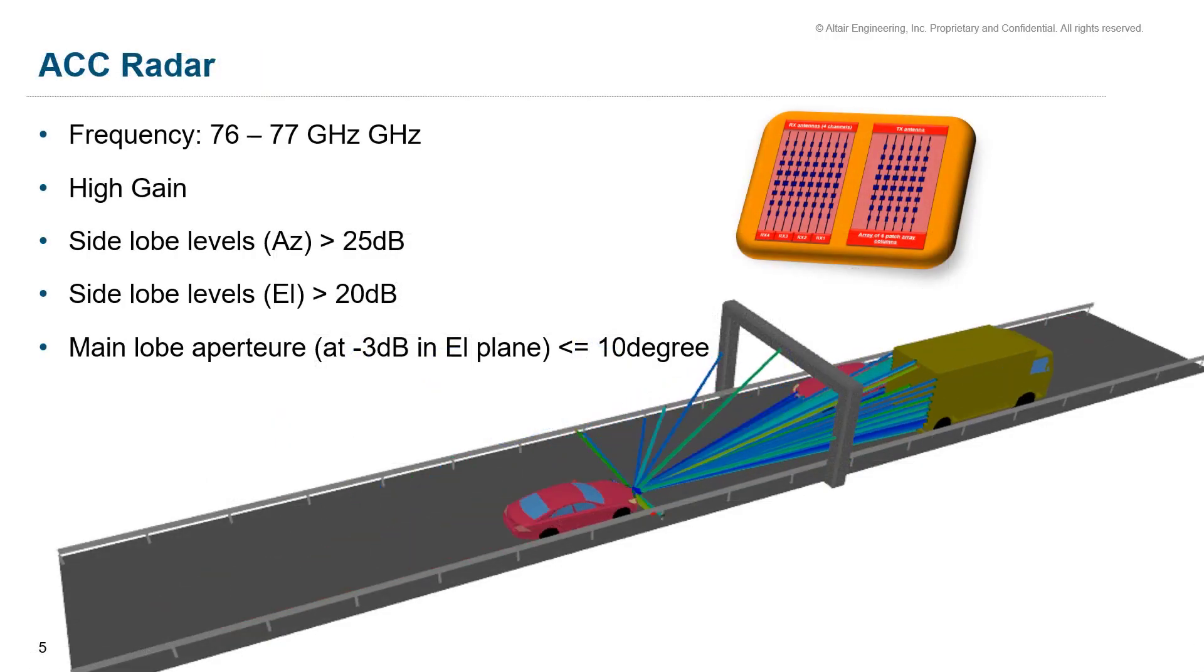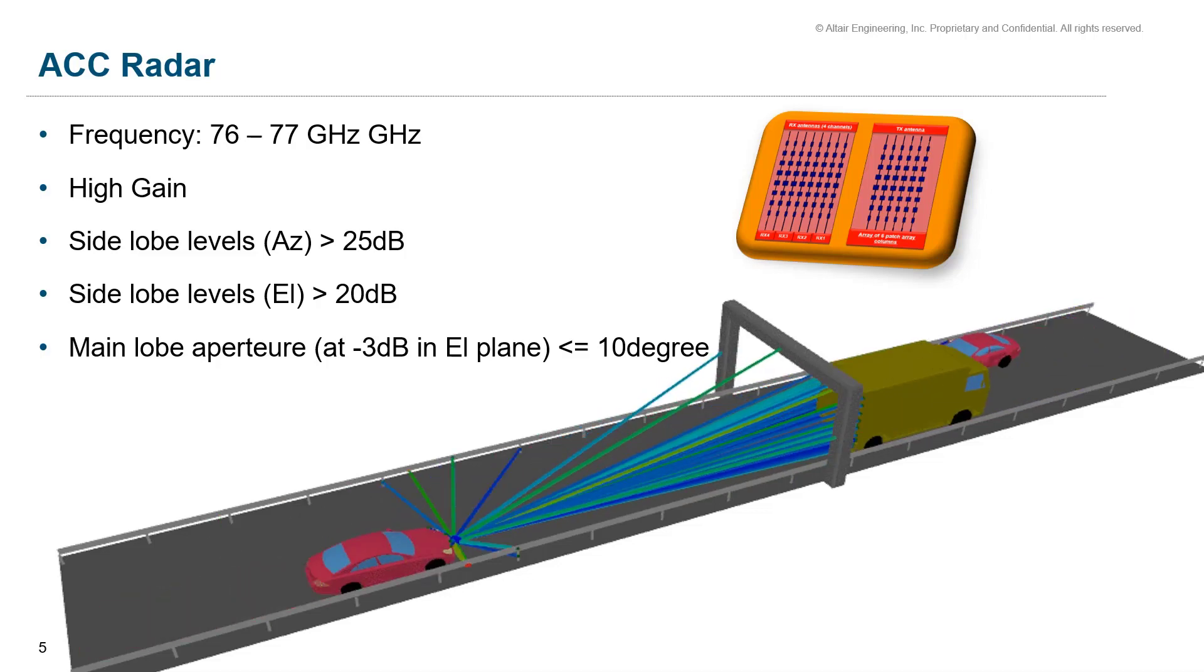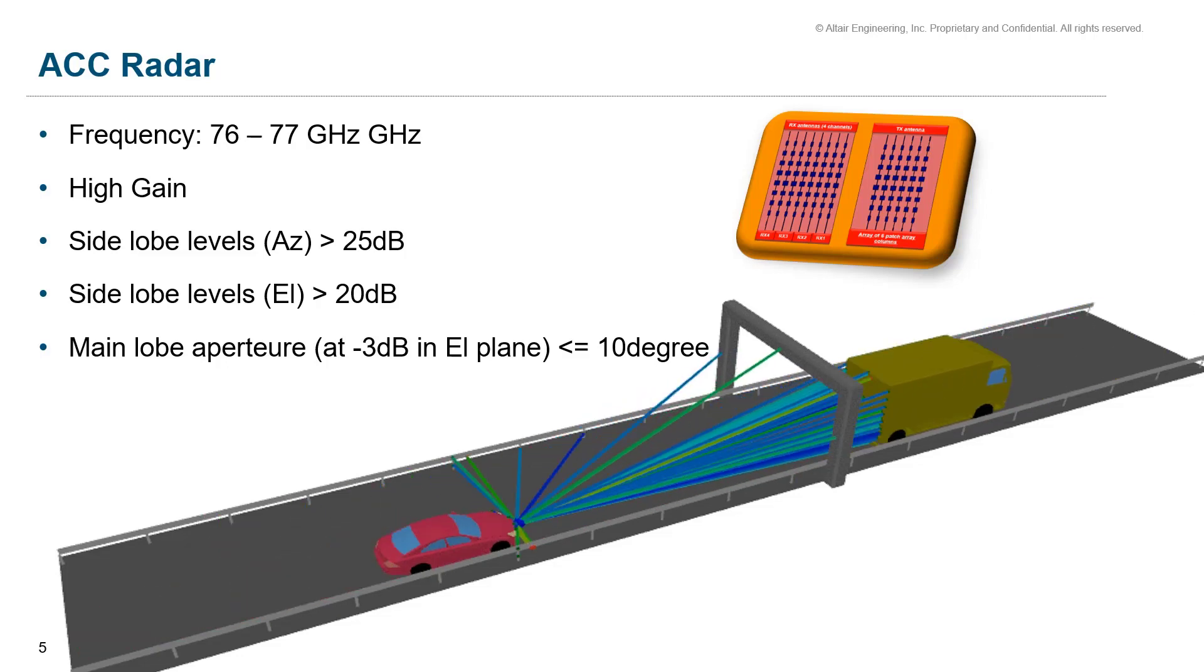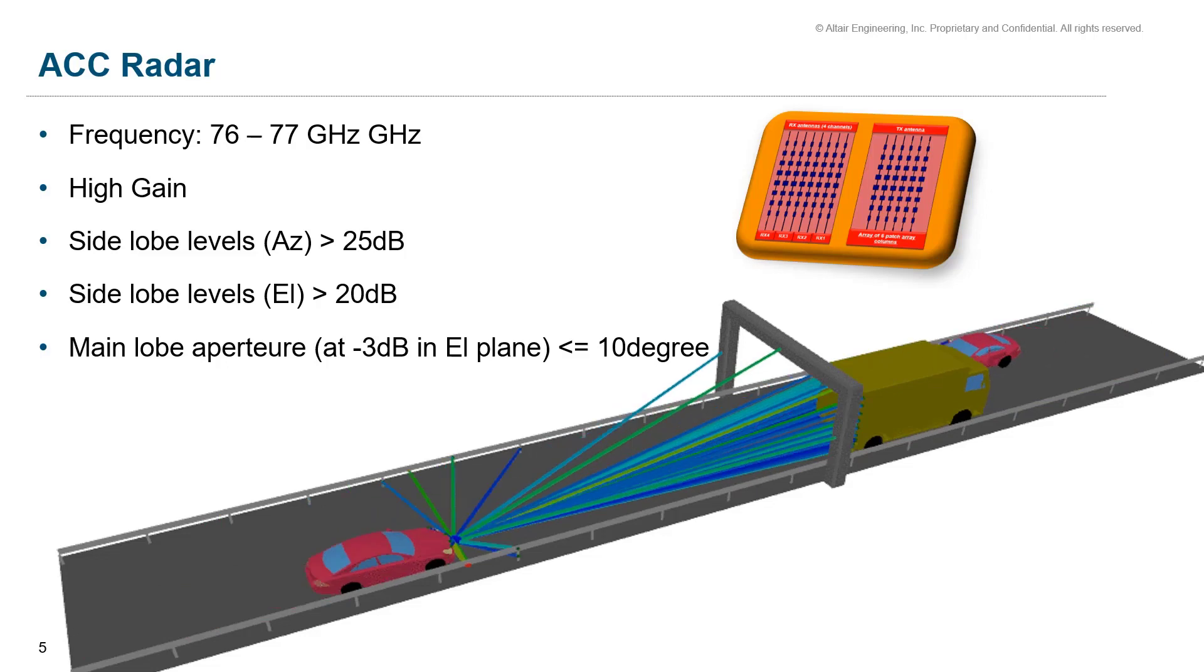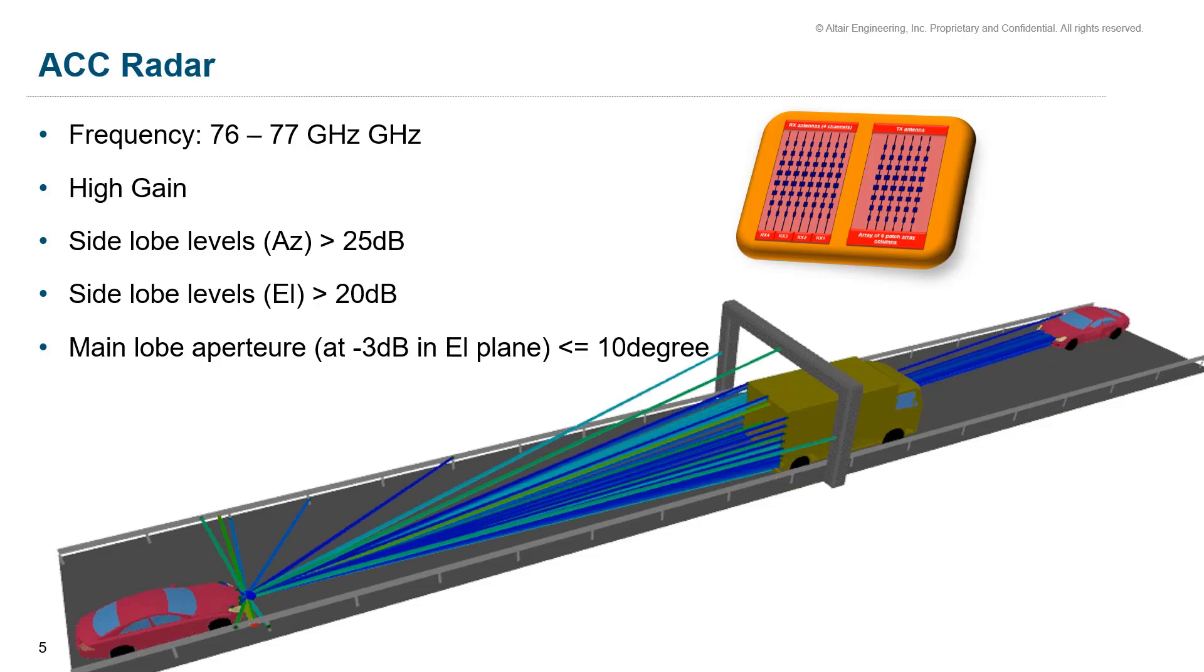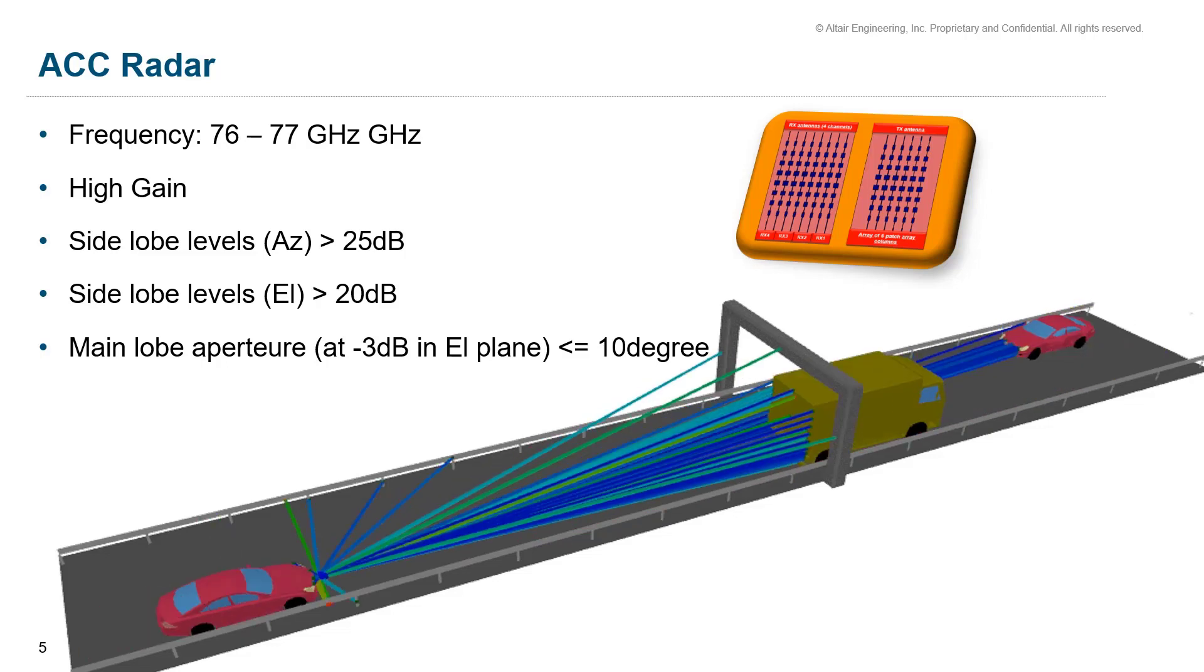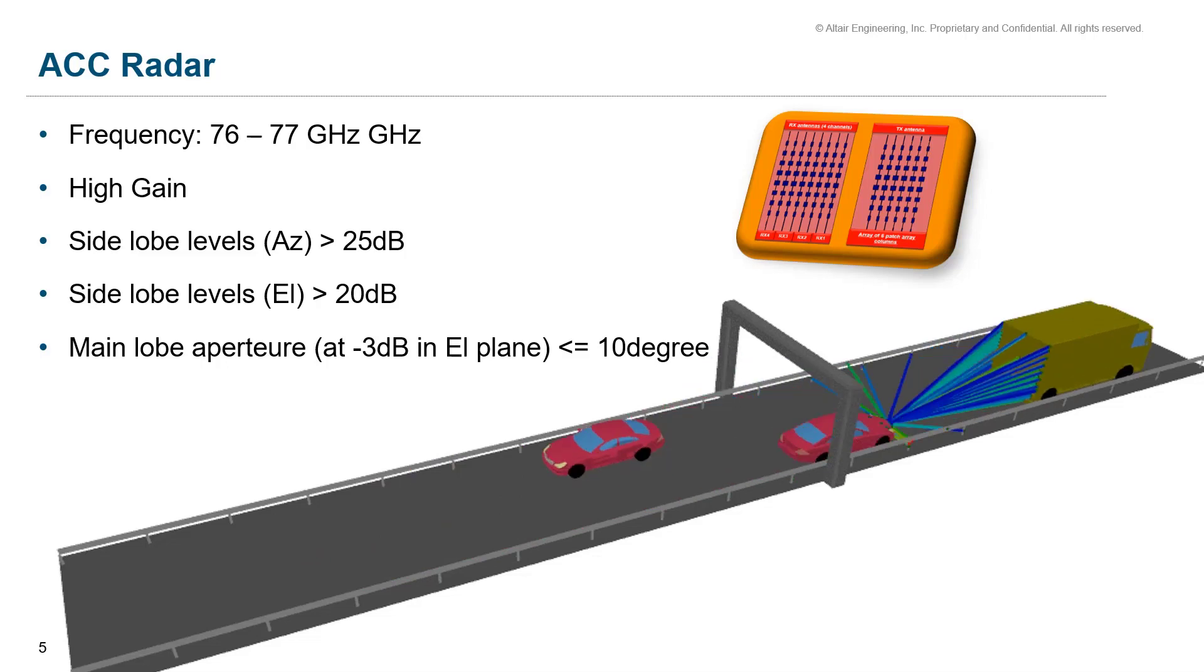One such application that uses millimeter wave frequency in the automotive industry is the automotive cruise control radar. The automotive cruise control or the ACC is an advanced driver assistance system for road vehicles that automatically adjusts the vehicle speed to maintain a safe distance from the vehicles ahead to avoid collisions in various scenarios. This technology is widely regarded as a key component of future generations of intelligent cars.